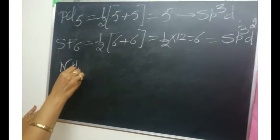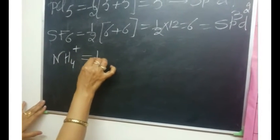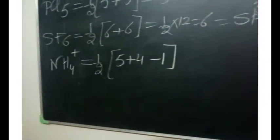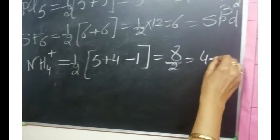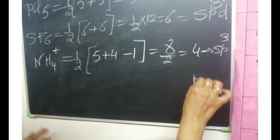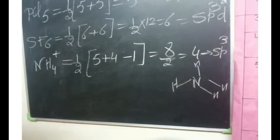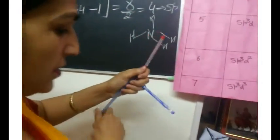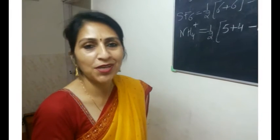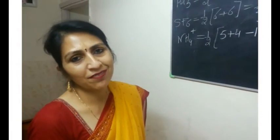This formula can also be applied to cations and anions. For example, the ammonium ion NH₄⁺: nitrogen has 5 valence electrons, 4 surrounding monovalent hydrogen atoms, minus 1 for the positive charge (since positive charge indicates loss of electron). The answer is 8/2 = 4, so hybridization is SP³ — meaning tetrahedral geometry. All 4 hydrogens are arranged at the tetrahedral corners of a regular tetrahedral geometry. That is all about hybridization. I hope you have understood. Thank you very much.